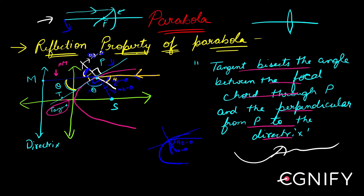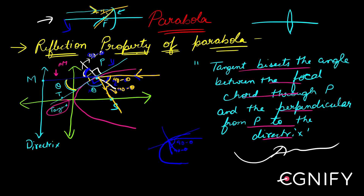The ray comes in at angle 90 minus theta, strikes the normal, and with respect to the normal it is reflected by 90 minus theta, passing through the focus. That's why every ray which comes parallel will pass through the focus. Whatever this angle is, the same will be the reflected angle. This is what the reflection property of a parabola leads to. Let's move on to the next subtopic.